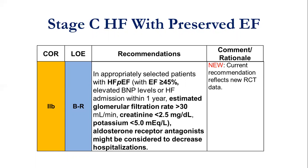This guideline also mentioned that for patients who have heart failure with preserved ejection fraction — EF greater than or equal to 45 percent — with estimated GFR greater than 30, creatinine less than 2.5, and potassium less than 5, we can consider aldosterone receptor antagonists to decrease hospitalizations.